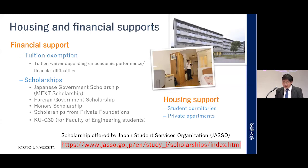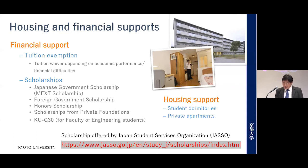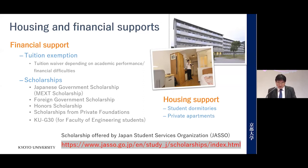Scholarships for this program include the Japanese government scholarship, some foreign government scholarships, honors scholarships, scholarships from private organizations after you come to Japan, as well as a faculty scholarship for entering students called KUG-30. For housing support, the dormitory is available for those who first come to Japan and need to adjust to life in Kyoto city. More information about scholarships can be found on our website.